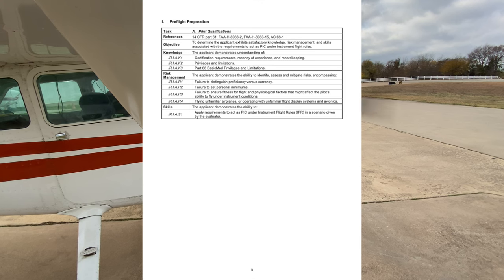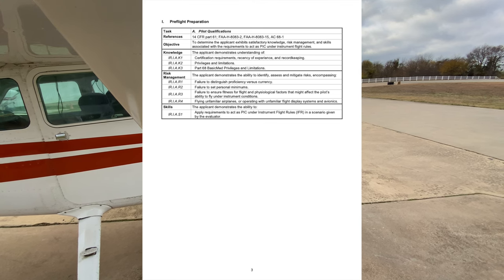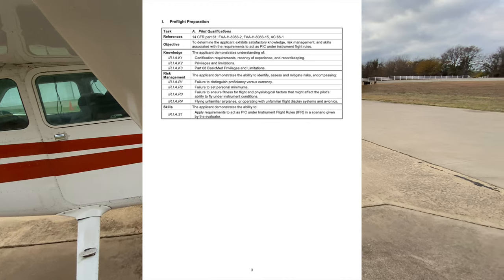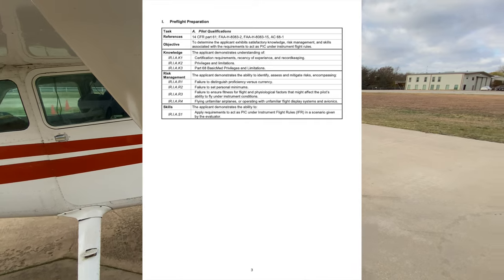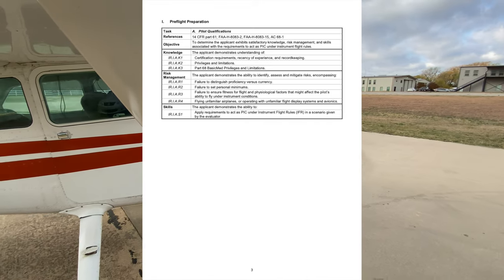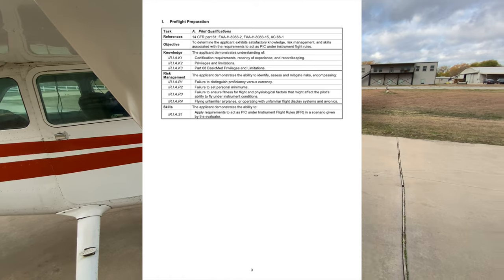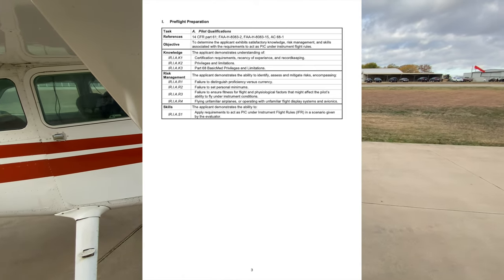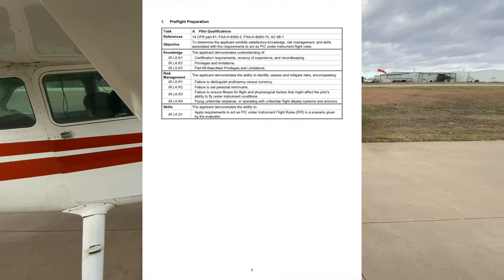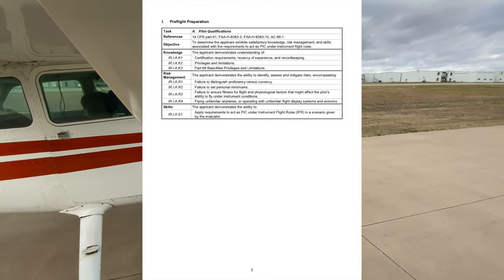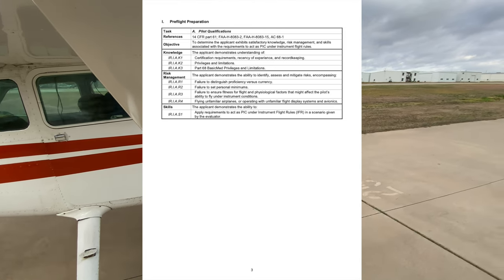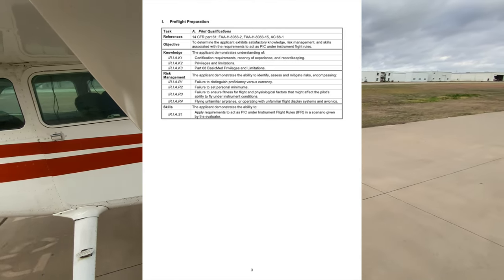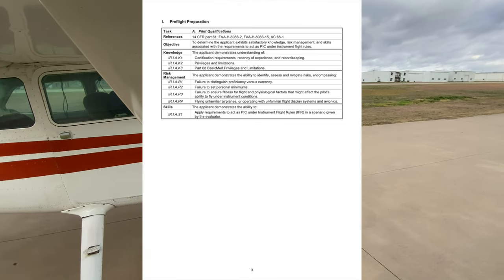You also have to be able to read, speak, write, and understand the English language. For recency of experience, you must have had a flight review, and to carry passengers, three takeoffs and landings in the preceding 90 days in the same category, class, and type. That flight review must have been done in the last two years. To fly instruments as PIC, you need six approaches within six months, hold procedures, and intercepting and tracking courses — this can be done in an aircraft or simulator. You can find this in 61.157.